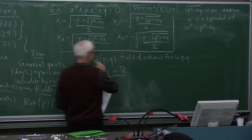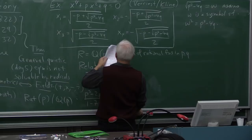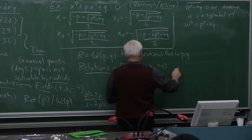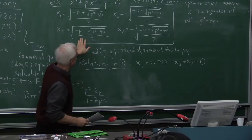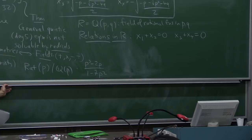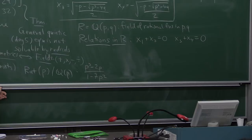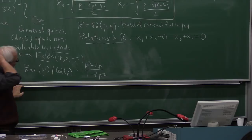All right, so these four numbers satisfy certain relations. Let's see what the relations are. Relations actually in this field R. Relations are pretty simple because we see that x1 and x2 are negatives of each other. So x1 plus x2 happens to equal 0, and x3 plus x4 also happens to equal 0. That's completely obvious because this one is just the negative of this one. So those are two relations satisfied by these four solutions, whatever they might really be.